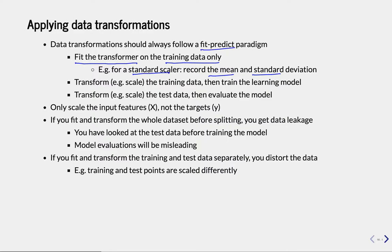You look at your training data and, based on your training data alone, you compute the mean and standard deviation for every feature. Then you're done fitting. Then you transform — for instance, scale the training data using those learned model parameters. After you scale the training data, you can train your learning model.